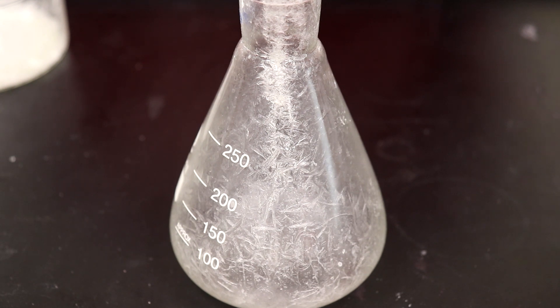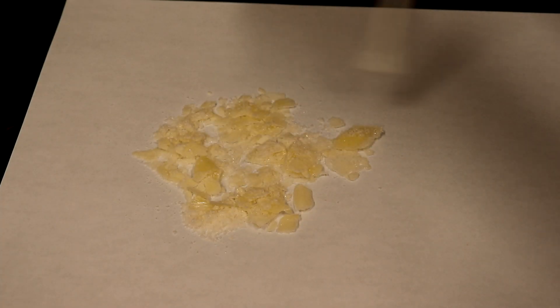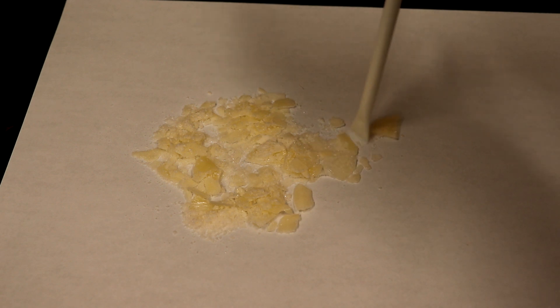The product recovered from the chloroform extraction was rather crude and had a yellow tinge to it, so it was recrystallized from hexanes.